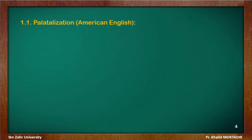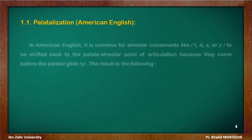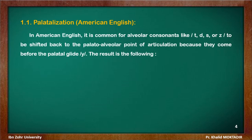Now look at these examples from American English. In American English, it is common for alveolar consonants like T, D, S, and Z to be shifted back to the palatal alveolar point of articulation because they come before the palatal glide Y.